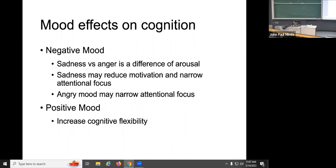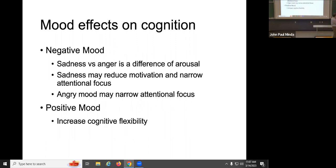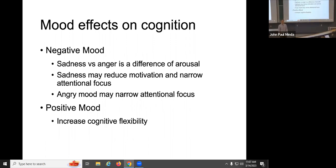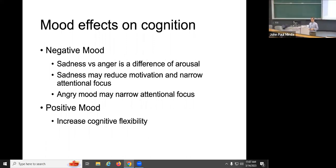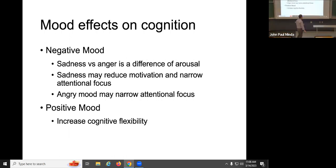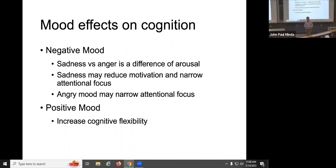Negative mood can be discussed in lots of different ways. Sadness and anger are the two most common. They differ really in arousal — a sad mood is a negative mood that's low arousal, while anger is a negative mood that's higher arousal. One motivates you to do things, the other motivates you not to do things. Sadness tends to reduce motivation and can also narrow attentional focus. With negative mood, people tend to be less flexible and less likely to change their approach.